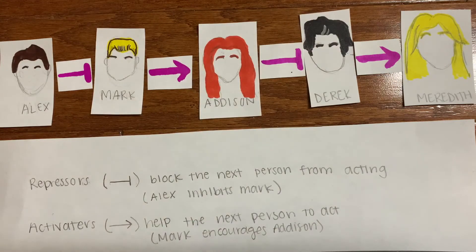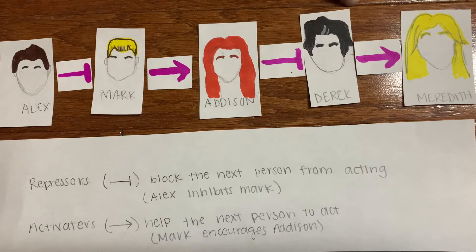I will be explaining a developmental network using characters from Grey's Anatomy. Here you can see we have five characters.